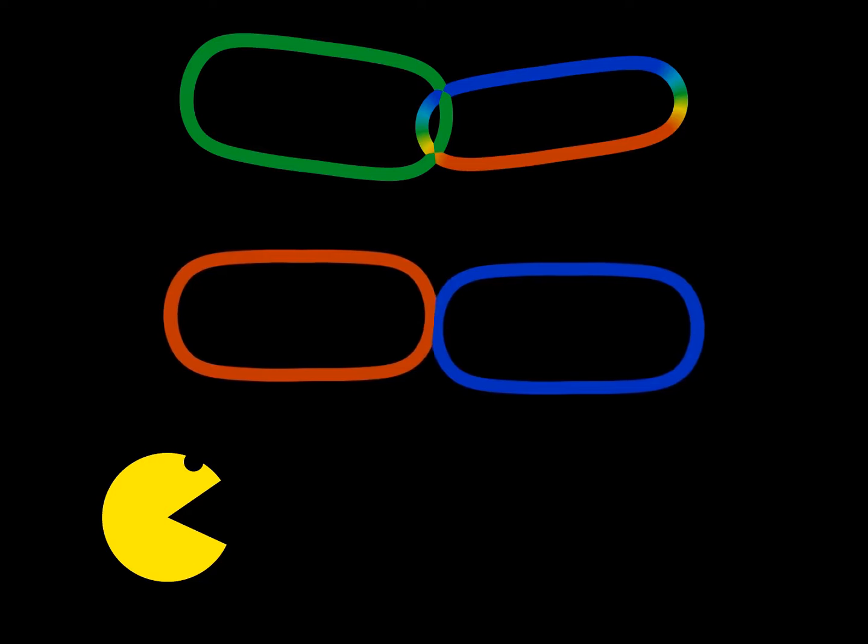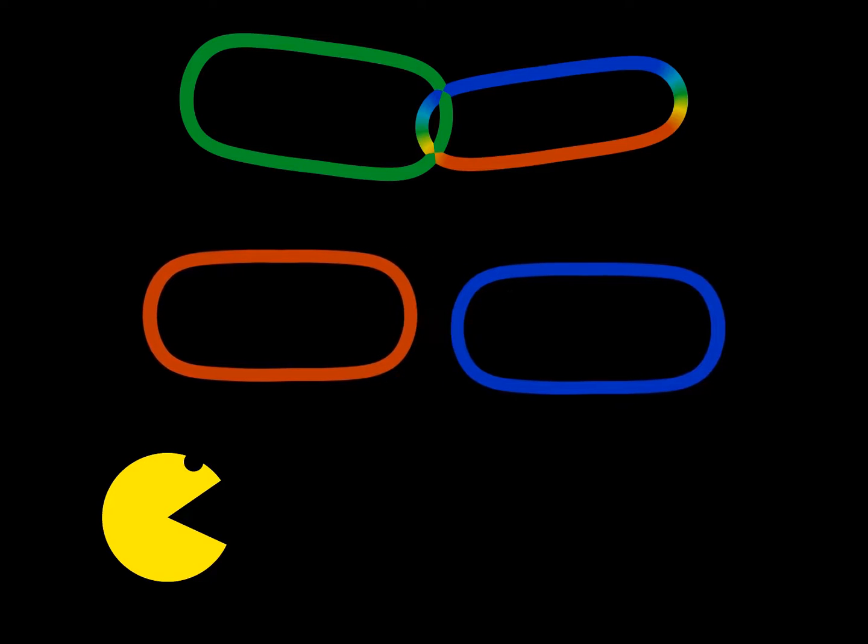Instead, two unlinked rings may look like this. They can be pulled apart since they intersect always in points with different colors.